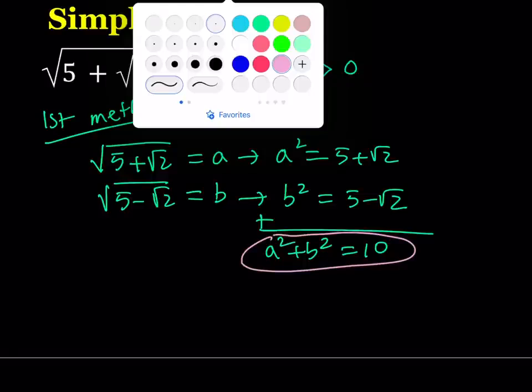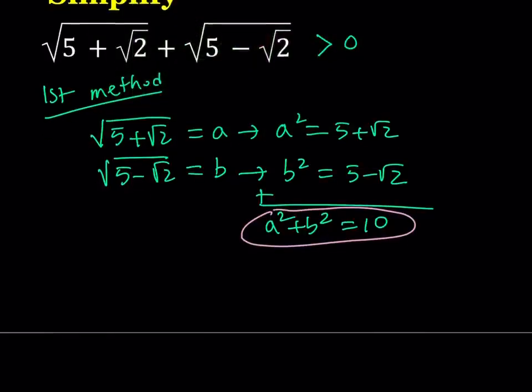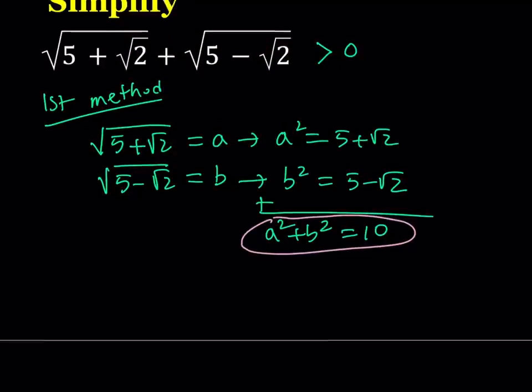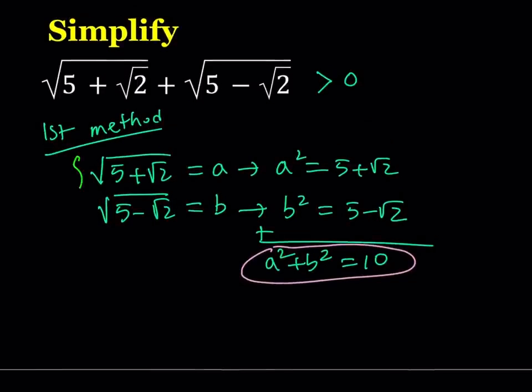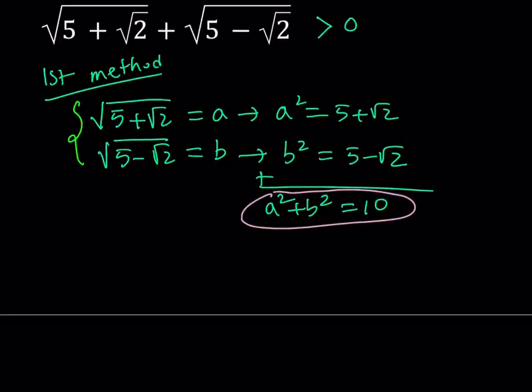Now, what we want to do is get another equation in terms of a and b and then solve that as a system. And to get that, I'm going to take advantage of the two conjugates. These are conjugate expressions, a and b. So, I'm going to multiply them.